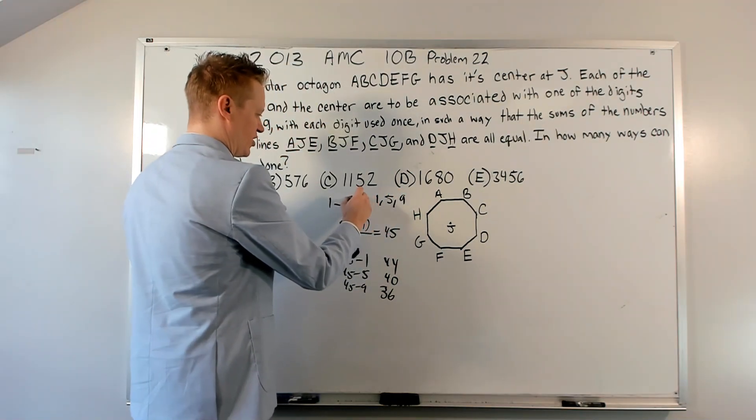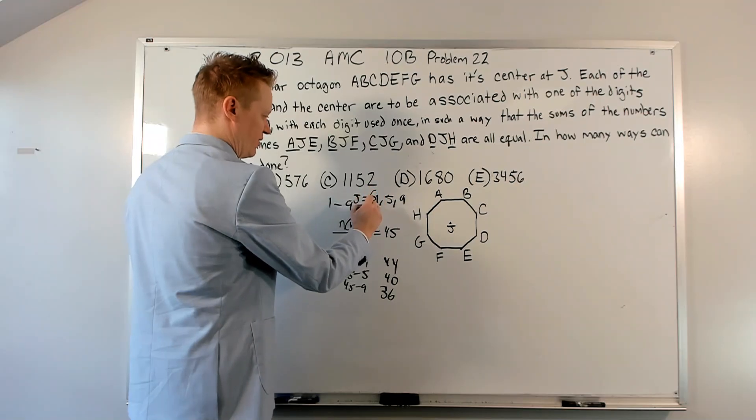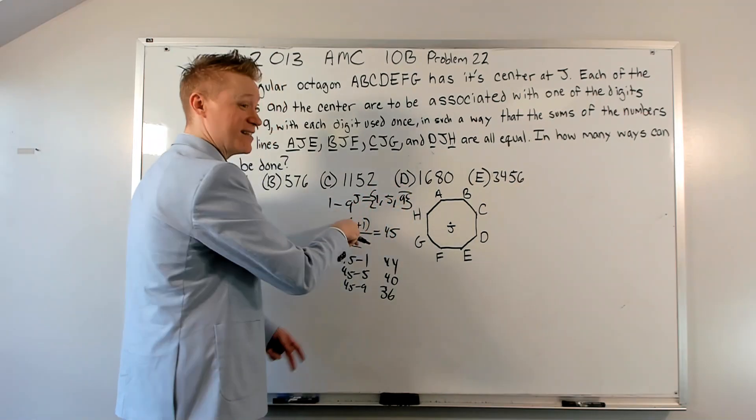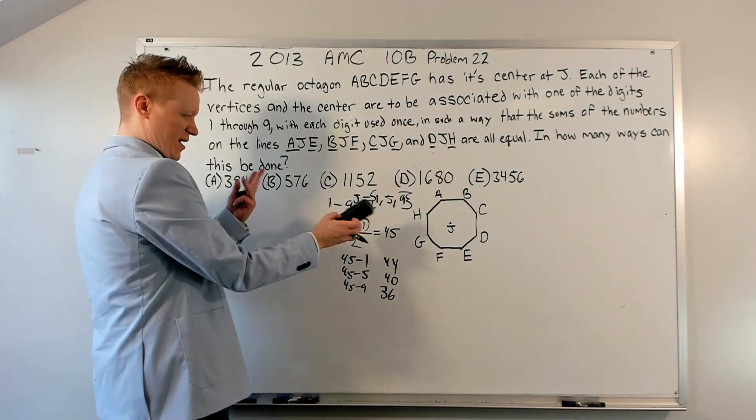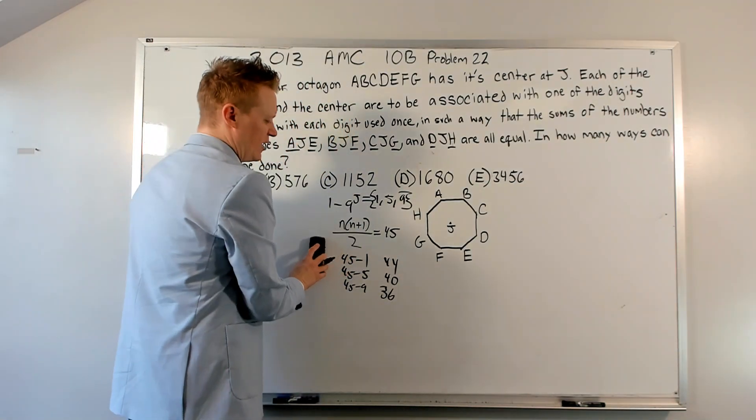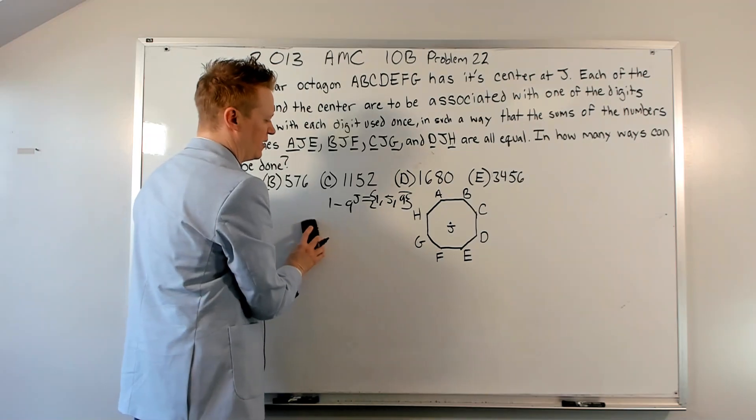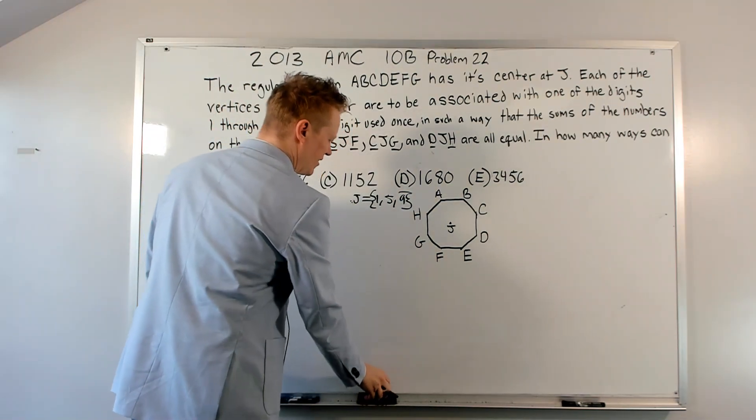Okay, so J equals, right, one of these three. It isn't actually equal, it's an element of the set, but we don't really care. We're just kind of writing what helps us think. Okay, so I'm going to erase this. Now we can just think, alright, if J is 1...